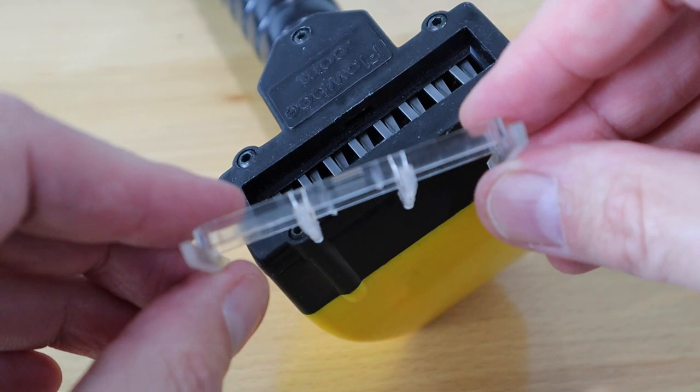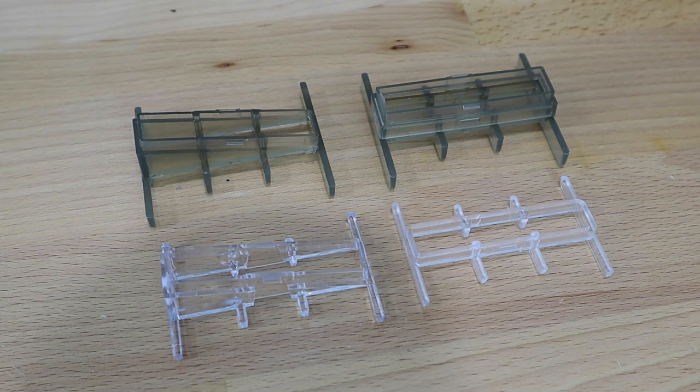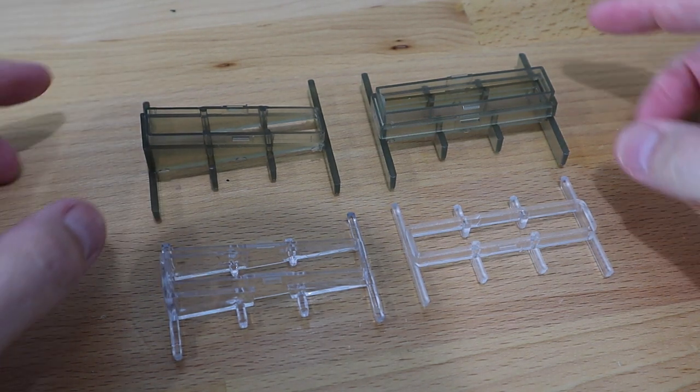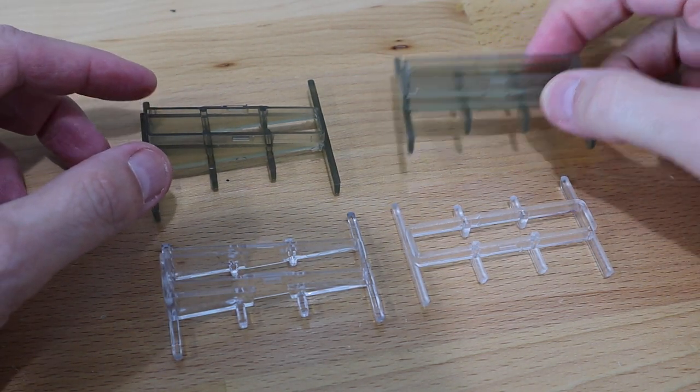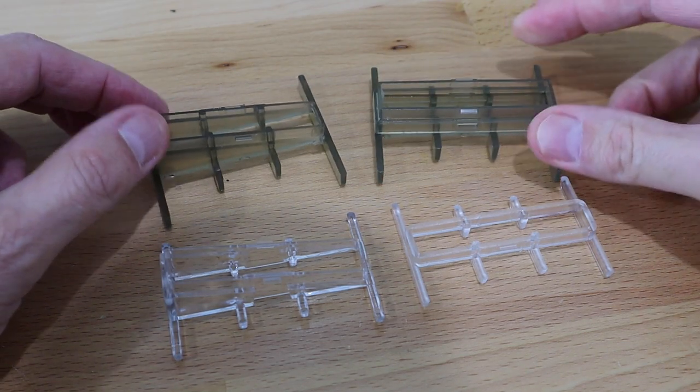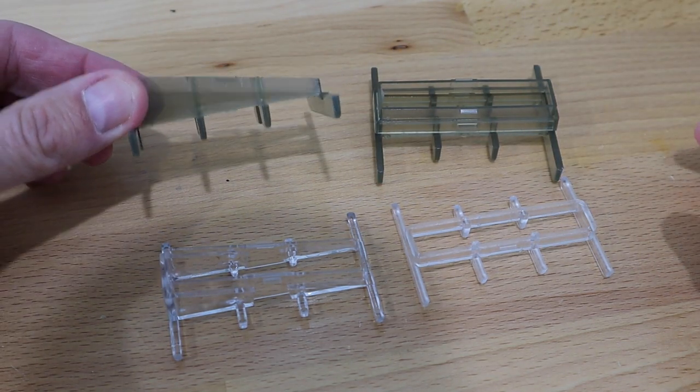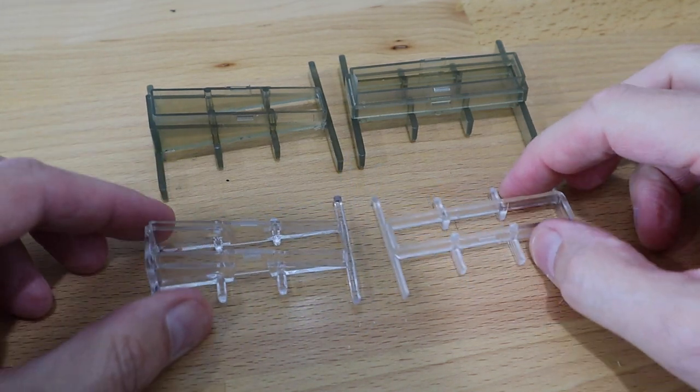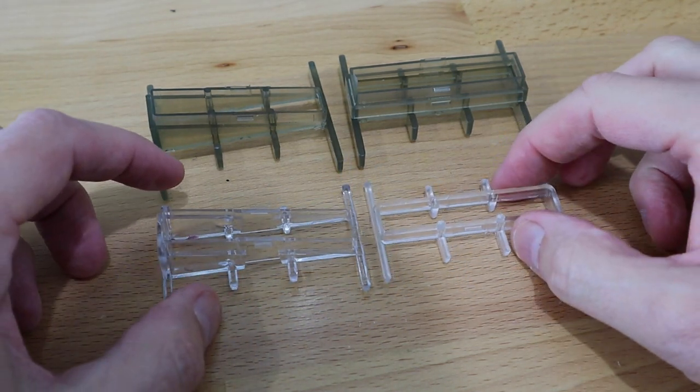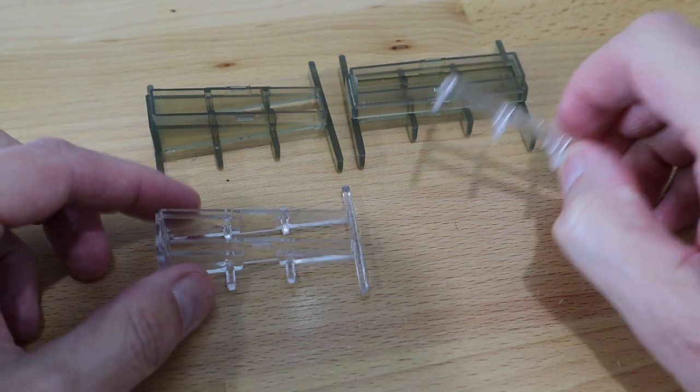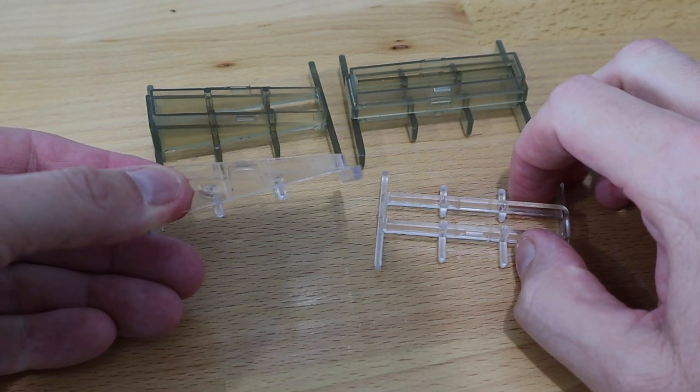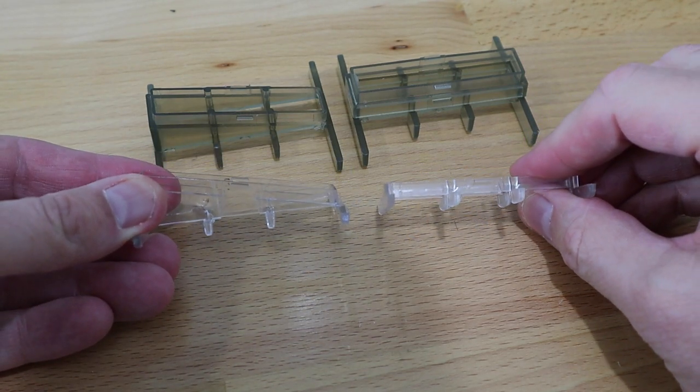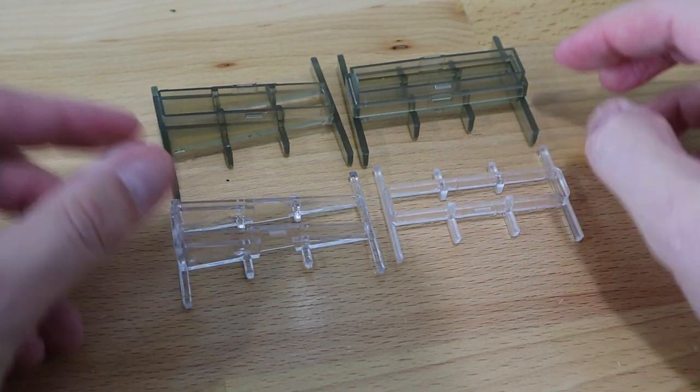Here you can see the tan colored attachments—these are the stock attachments from Flowbee. This is the straight and this is the angled for the side of your head. The clear plastic ones are the optional ones that you can order from Flowbee. This is called the short flat and this is called the short angled. I'm going to get down here and show you what the difference is in height.